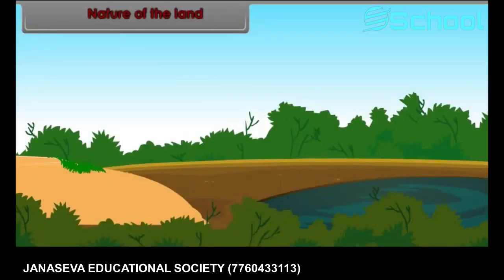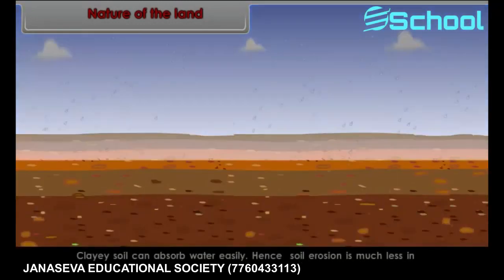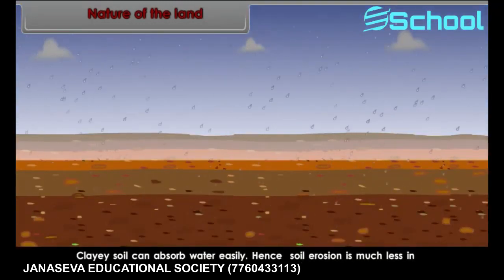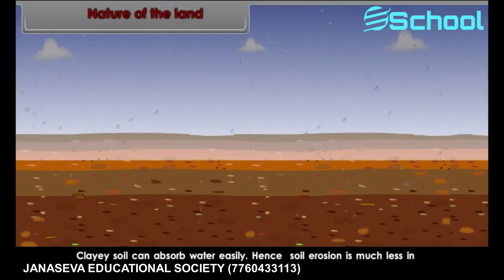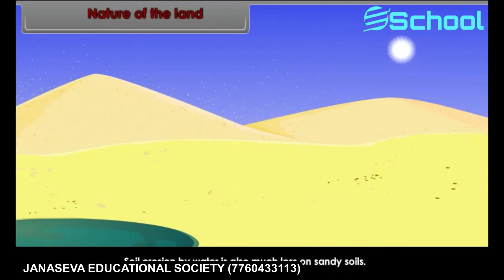The nature of the land is one of the important factors for soil erosion. Clay soil can absorb water easily; hence, soil erosion is much less in clay soil. Soil erosion by water is also much less on sandy soils.